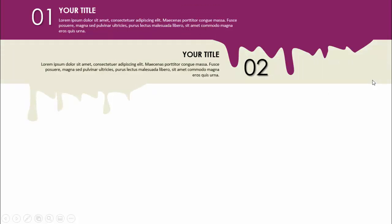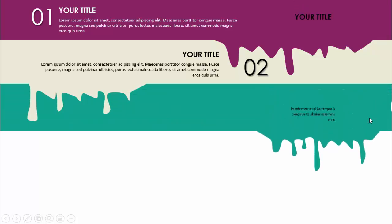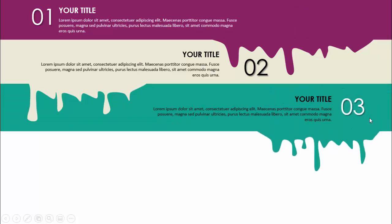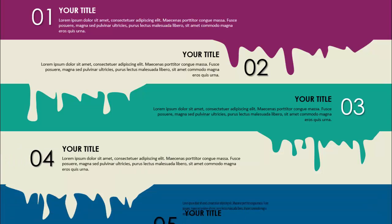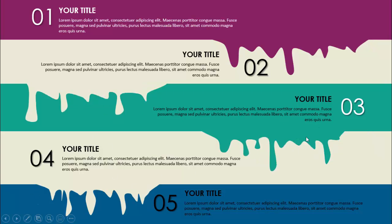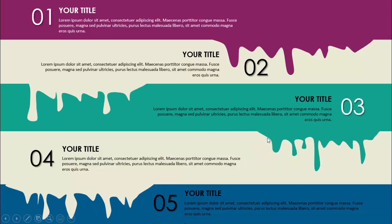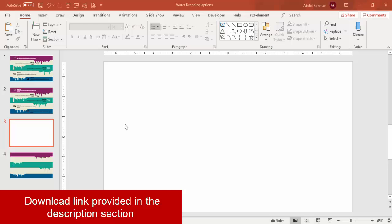On the next click it will show the water dripping design for the second option with a different color, then option number two, the title, and the detailed text. Clicking further shows options three, four, and five. You can place this water dripping design wherever you want. Let's see how to do this in PowerPoint — add a new slide and go to Insert.